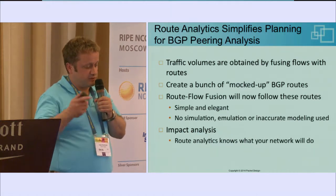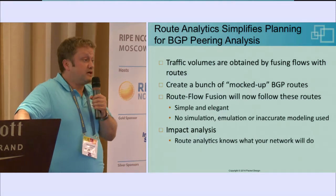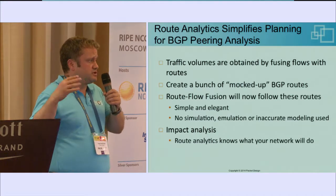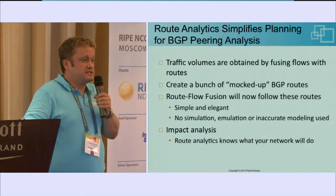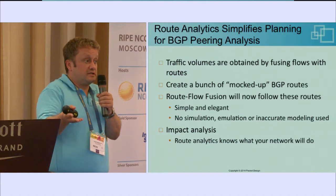Route analytics also simplifies planning because everything works on the model of routing — not based on simulation or emulation. It all works on BGP routes. If you added a new peering, that can be modeled very easily: you create a set of BGP routes and insert them into the analytics engine, and it will treat them as if learned from the network, reroute all flows as if they come from the new peering, and give you an idea of the impact.